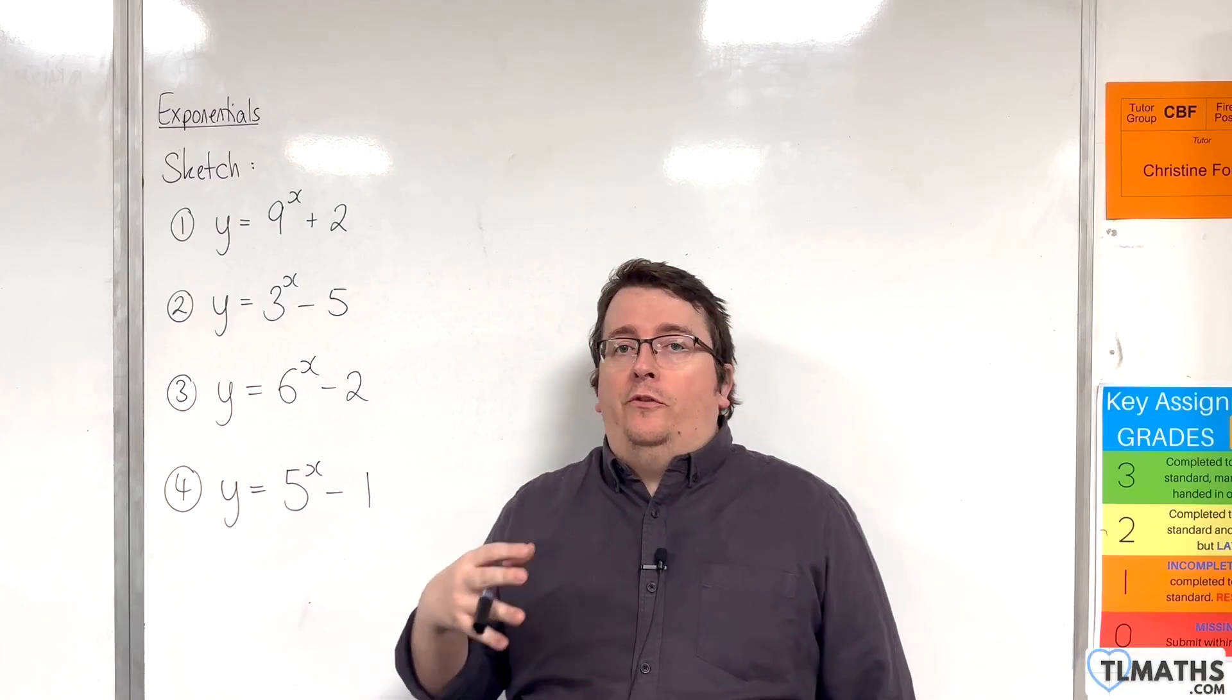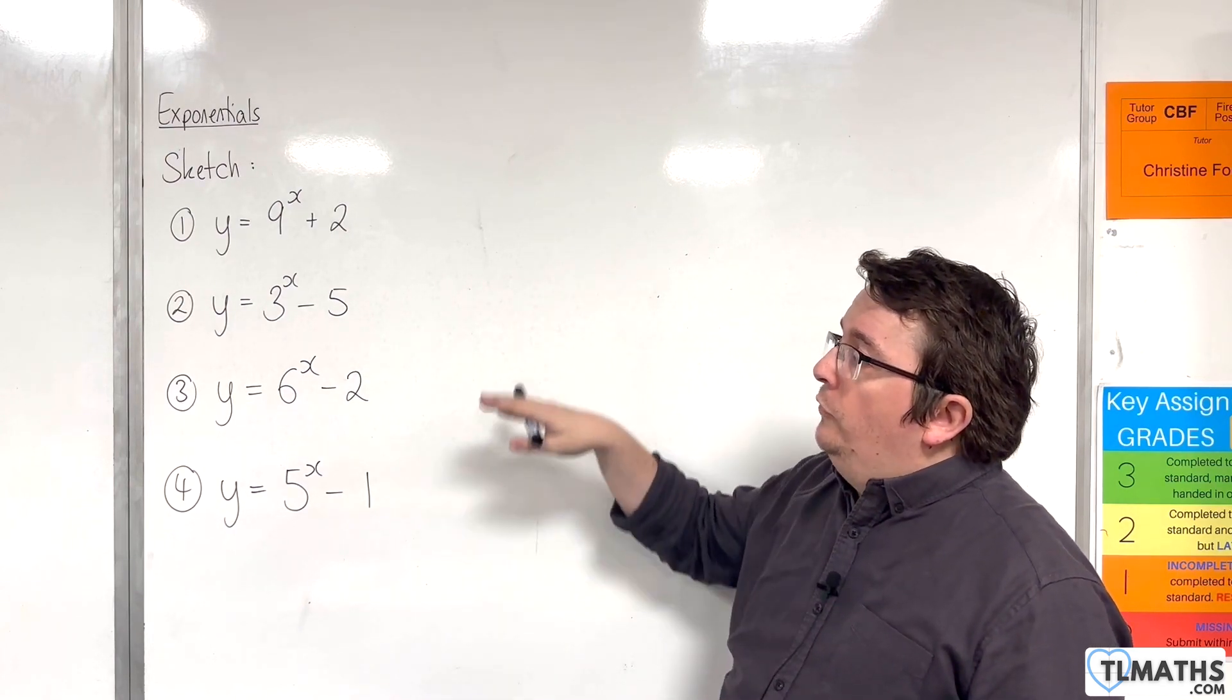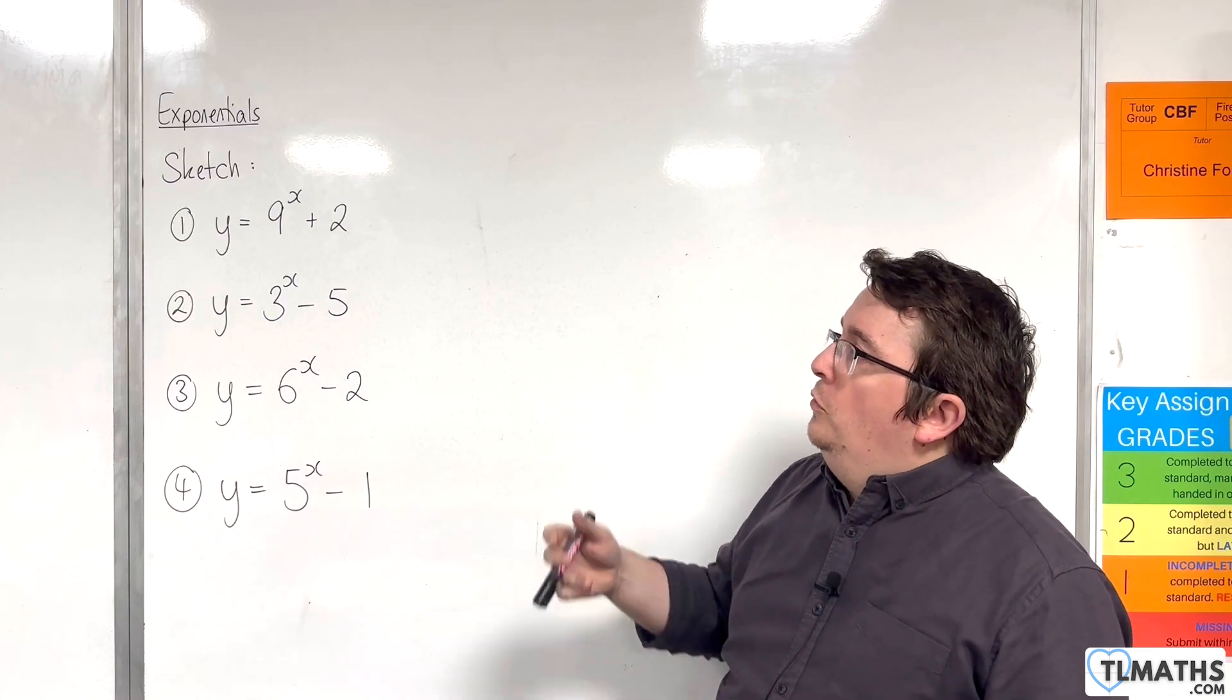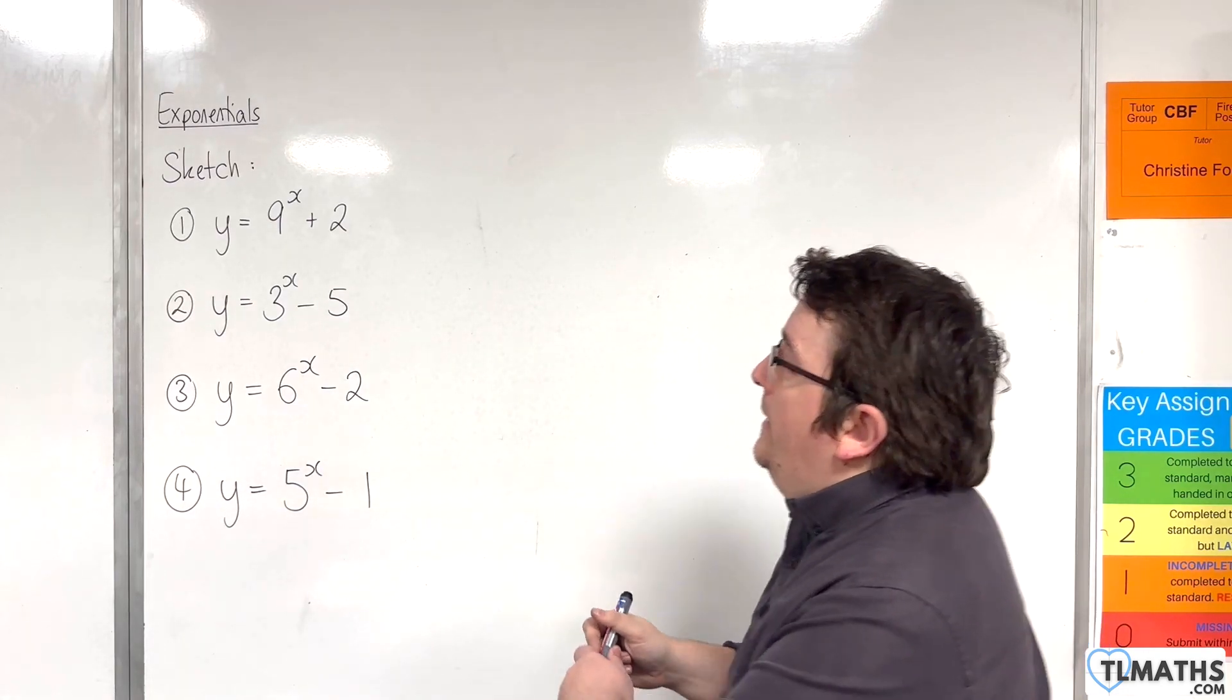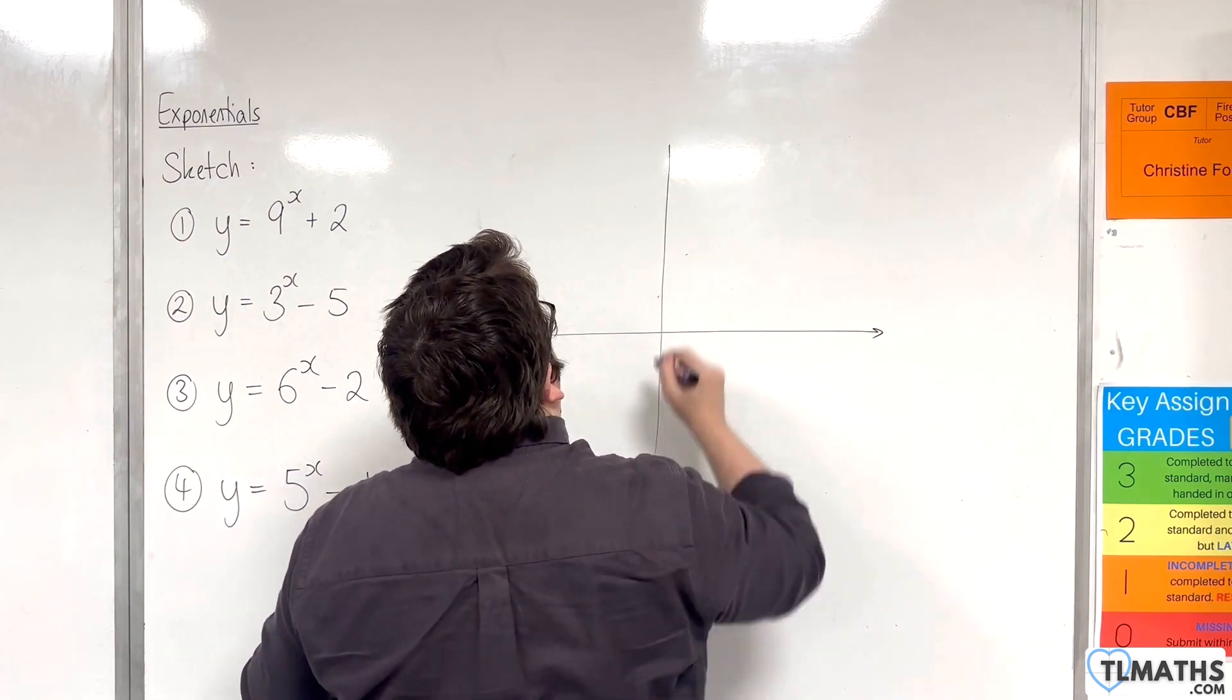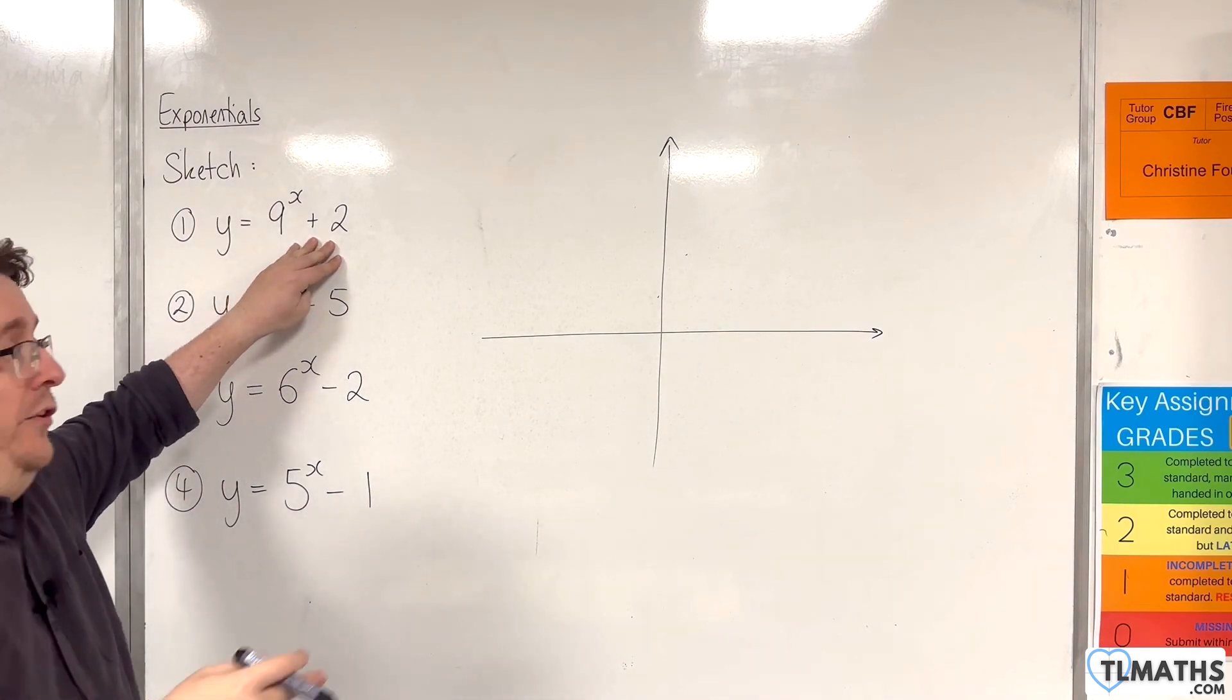In this video, I want to go through some examples of sketching some horizontal translations of exponential curves like these. For number 1, y equals 9 to the x plus 2, the first thing you want to do is draw on your horizontal asymptote, which will be at y equals 2.